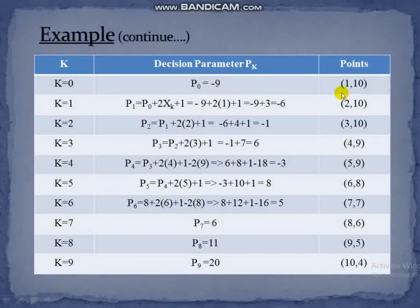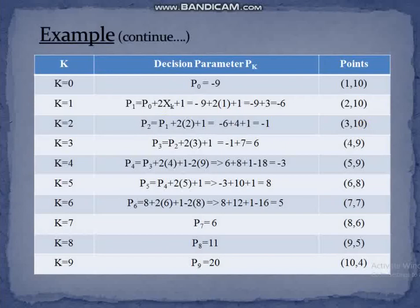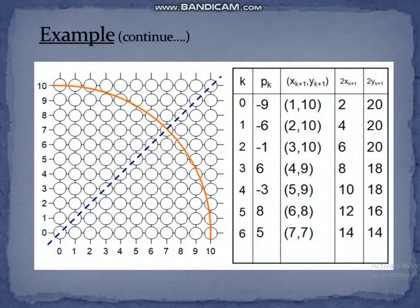So the x-coordinate is incremented to 2 and the y-coordinate remains the same. For k+1, the decision parameter equals −6, which is again less than 0. So we again increment x and y remains constant. This procedure continues until x equals y. In the given table, we have calculated all the coordinate points of the circle, and the circle has been drawn.